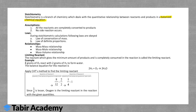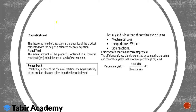A limiting reactant is the reactant which gives a minimum amount of product and is completely consumed first, causing the reaction to stop. For example, 8 grams of oxygen react with 2 grams of hydrogen to form water. The balanced equation is 2H₂ + O₂ → 2H₂O. Applying the Katz method, the ratio 1/4 is lesser, so oxygen is the limiting reactant in this reaction.